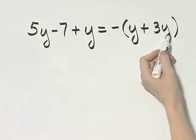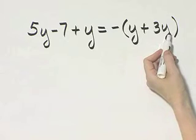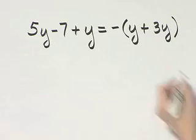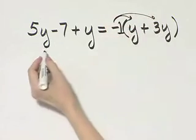Inside, these just happen to be like terms, so you could go ahead and add these. That would be 4y, and this is the opposite of 4y. If you happened not to notice, you're still okay by using the distributive property.